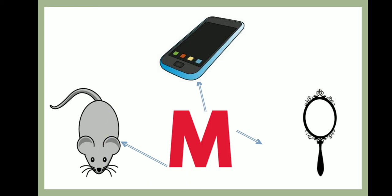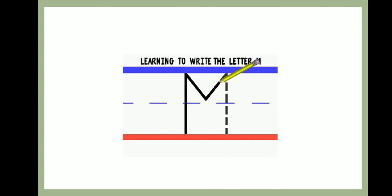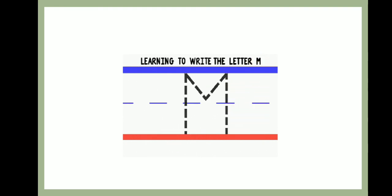Now children, I will tell you how to write capital letter M. We will start at the top and do a straight line down, then go back to the top, do a diagonal line down, then do a diagonal line up, and then do a straight line down. So in this way we write capital letter M.